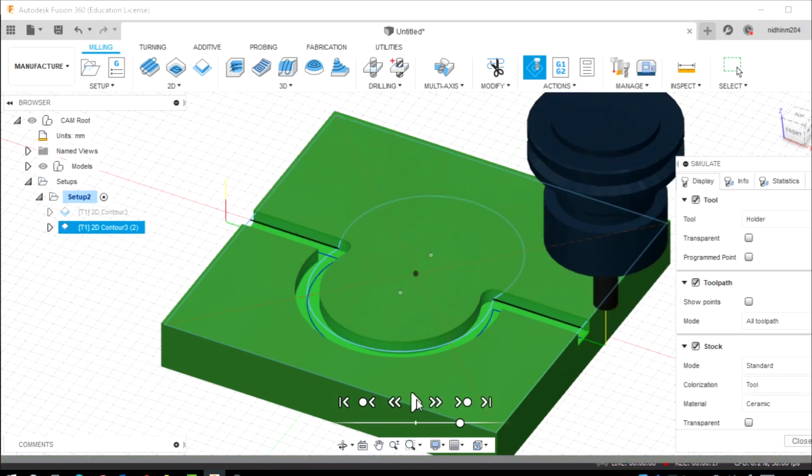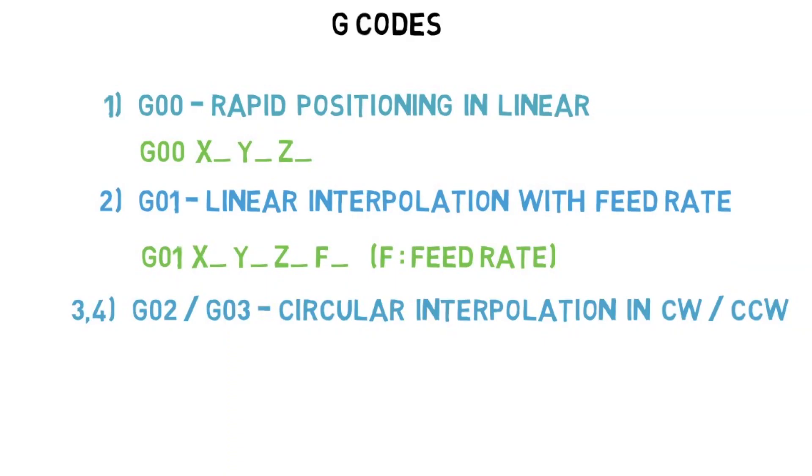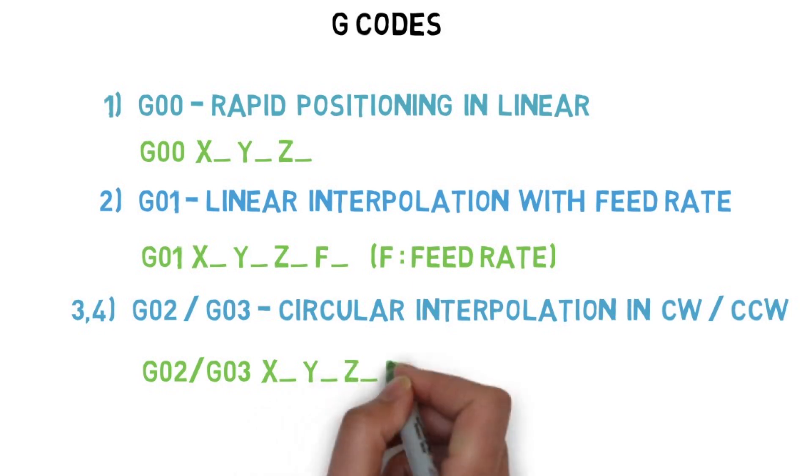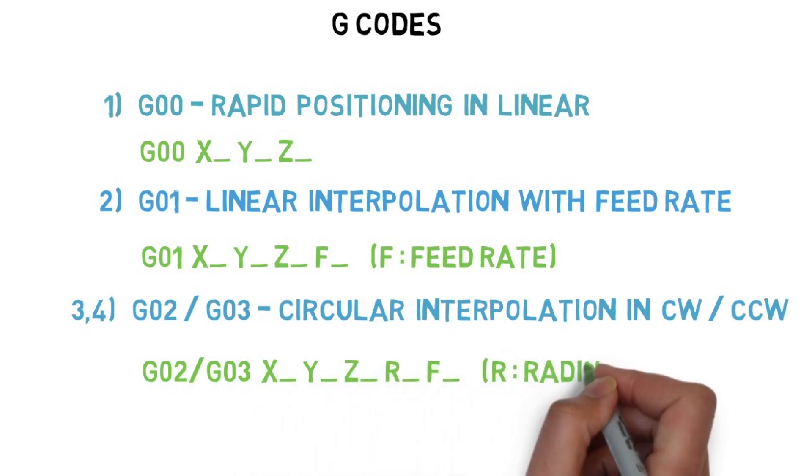We can do circular interpolation in two methods: the ArcRadius method and the ArcCenter method. According to the ArcRadius method, the format is G02 or G03, XYZ coordinates, R, F. Here, R is the radius value of the arc. These are the four types of interpolation or movement which are available on the CNC machine.